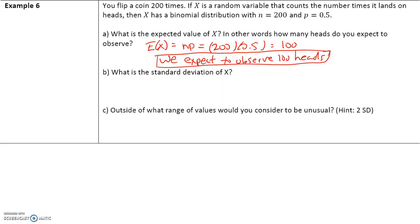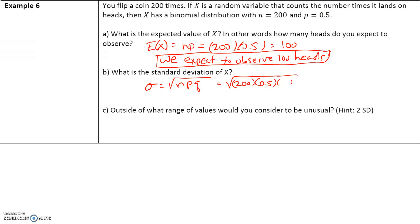What is the standard deviation of x? The standard deviation is given by the square root of n times p times q. We know n is 200, p is the probability of success which is 0.5, and q is the probability of failure — the coin landing on tails — so q equals 1 minus 0.5, which is also 0.5. Multiplying 200 times 0.5 times 0.5 and taking the square root gives us 7.071. That is the standard deviation of the coin flip done 200 times.